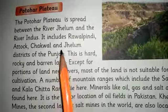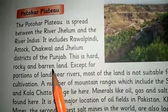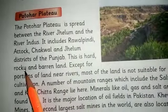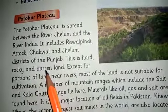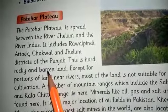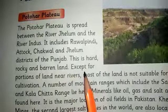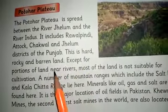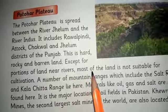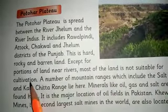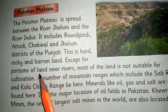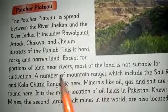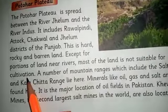These are high flat land areas. The land here is hard, rocky, and barren — it is rocky and barren land, meaning crops cannot be grown here. Most of the land is not suitable for cultivation, except for portions of land near rivers. The areas away from rivers are not suitable for growing crops.